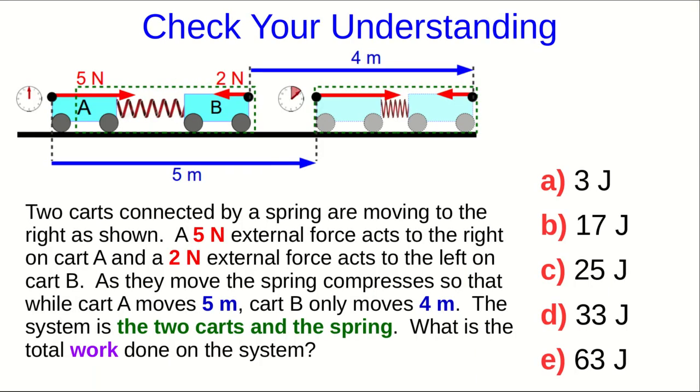Let's check your understanding of how to calculate works this way. So here we have two carts connected together by a spring, and they're moving to the right. And there's a 5 newton force acting on one to the right, and a 2 newton force to the left on the other. Cart A moves 5 meters, but because the spring compresses during the motion, cart B doesn't move quite as far. It only moves 4 meters.